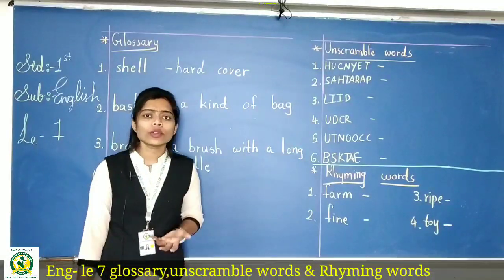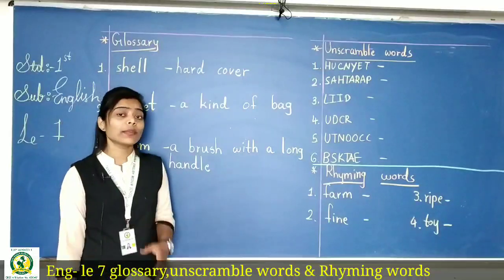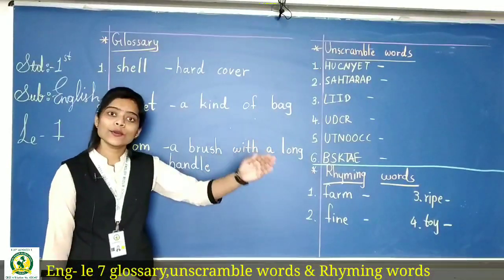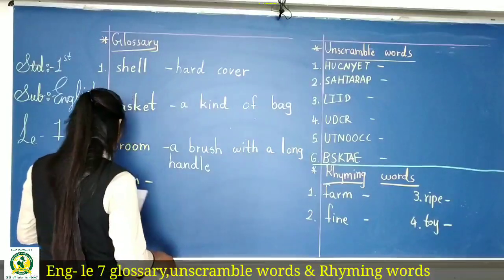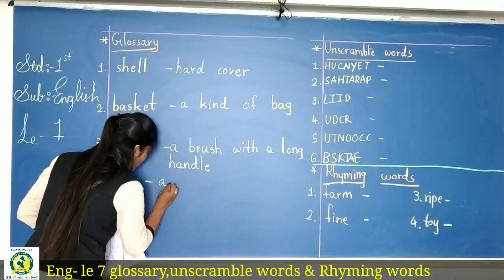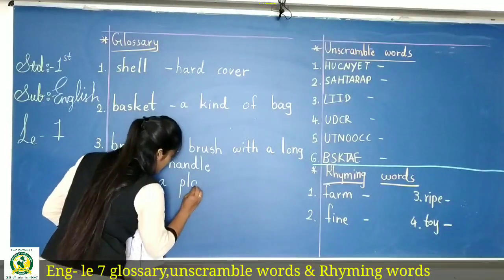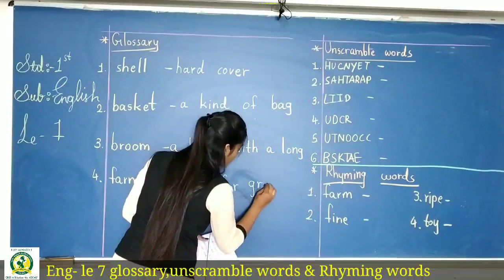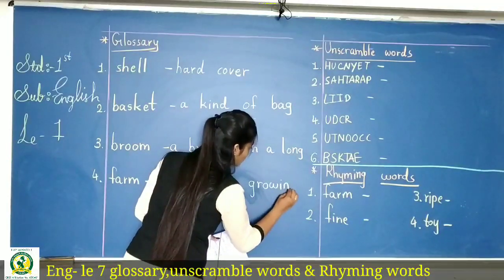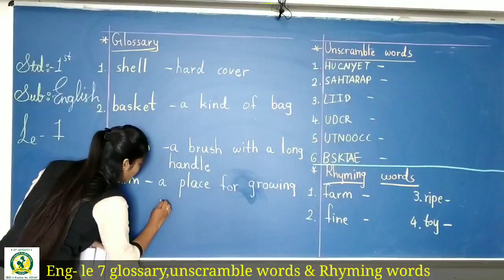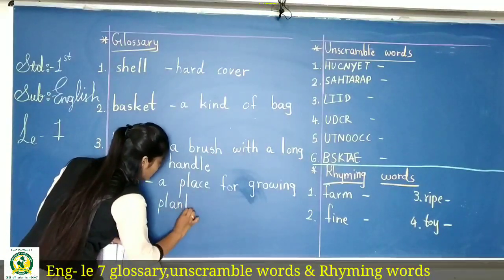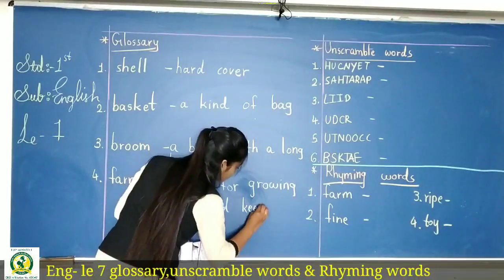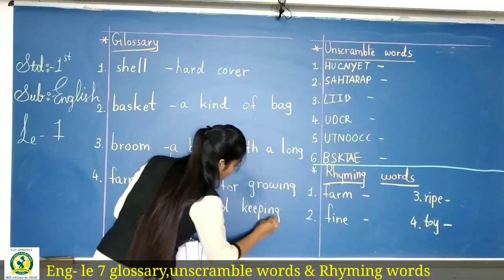Farm means what? Farm ek aisi jagah hai jahaan pe plants ko grow kiya jata hai aur animals ko rakha jata hai. So farm ka matlab hum likhenge: a place for growing plants and keeping animals.